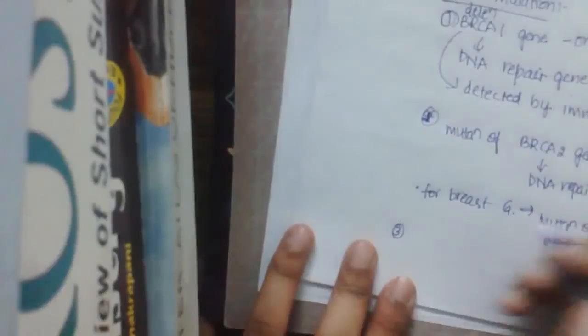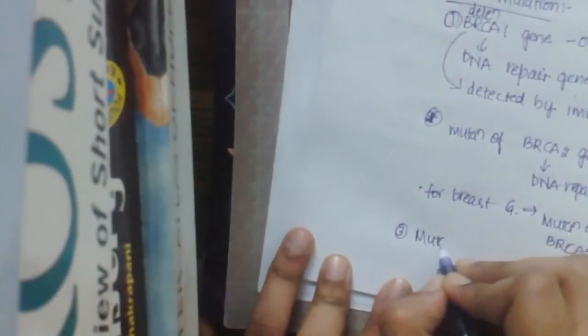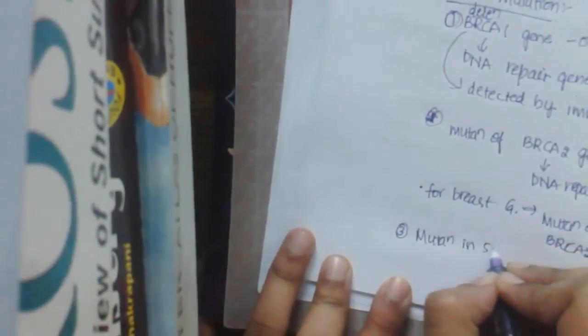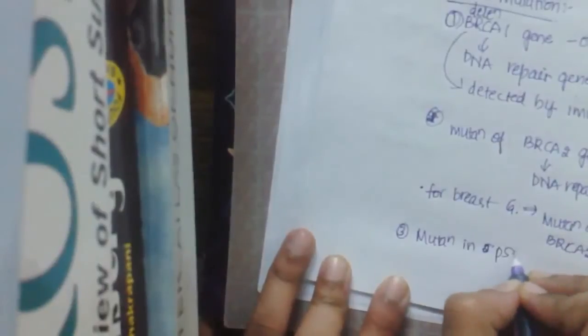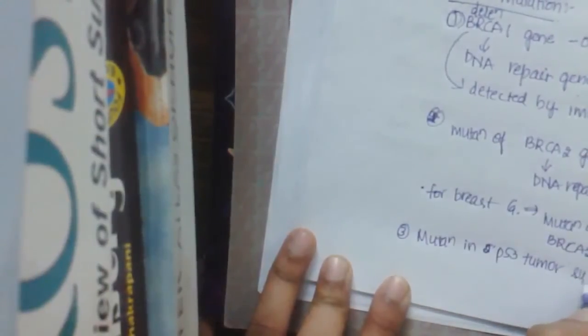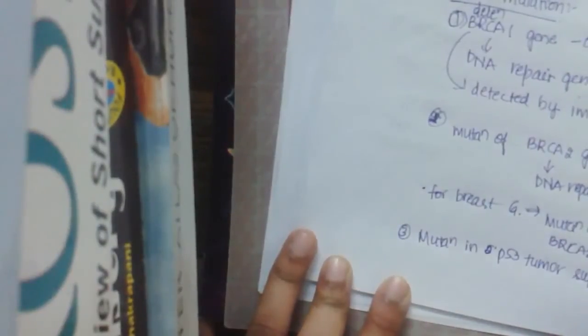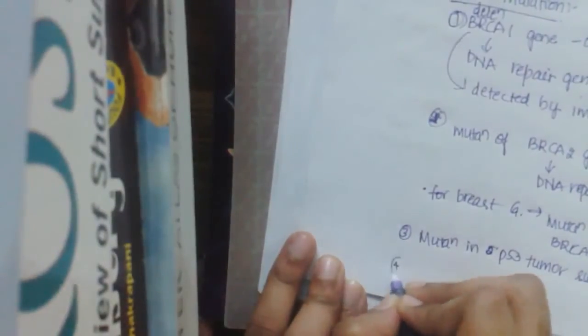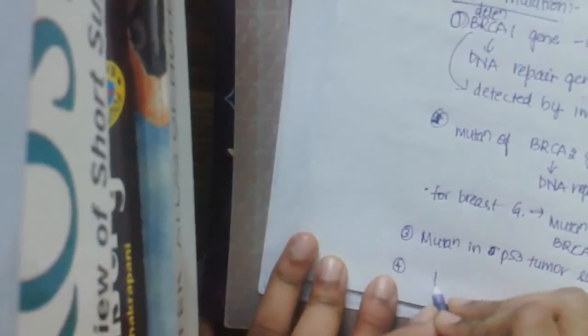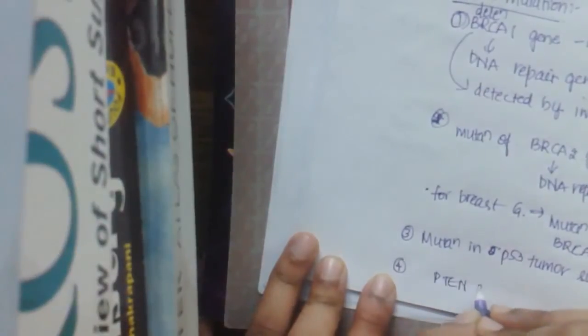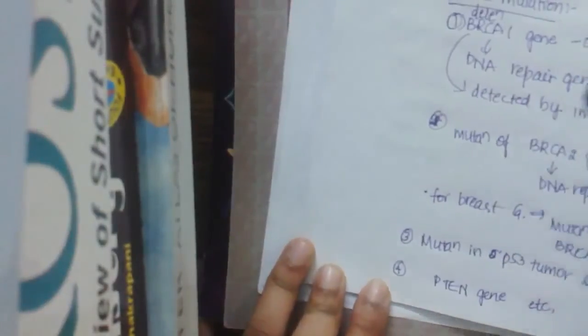And the third mutation is the mutation in P53 tumor suppressor gene. And the final mutations may be due to PTEN gene or other genes. These are the main genes which are responsible for the breast cancer.